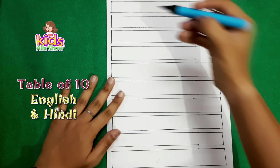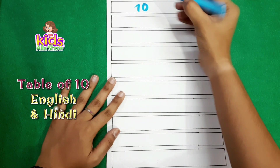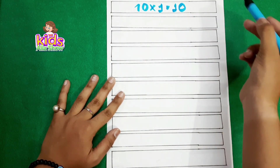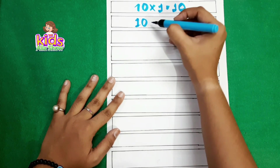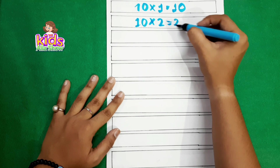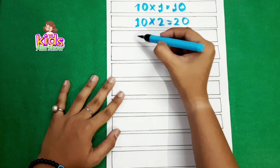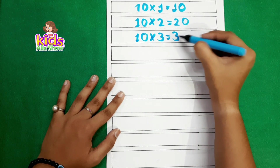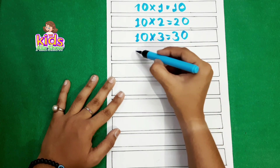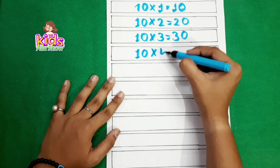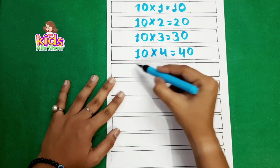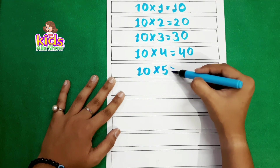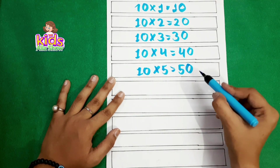Let's jump the table of ten. Ten ones are ten. Ten twos are twenty. Ten threes are thirty. Ten fours are forty. Ten fives are fifty.